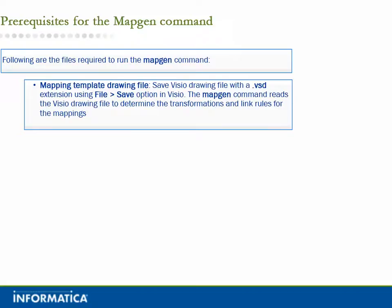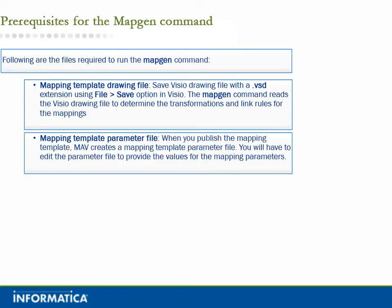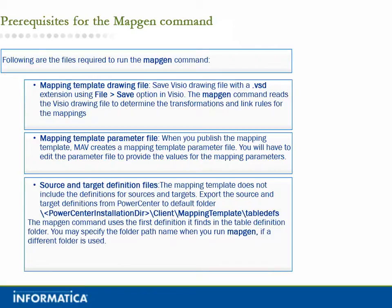The MapGen command reads the Visio drawing file to determine the transformations and link rules for the mappings. Mapping Template Parameter File: when you publish the mapping template, MAV creates a mapping template parameter file. You will have to edit the parameter file to provide the values for the mapping parameters. Source and Target Definition Files: the mapping template does not include definitions for sources and targets. Export the source and target definitions from PowerCenter to the default folder: PowerCenter installation directory\client\mapping template\table diffs. The MapGen command uses the first definition it finds in the table definition folder. You may specify the folder path name when you run MapGen if a different folder is used.